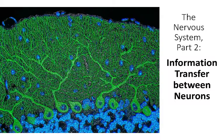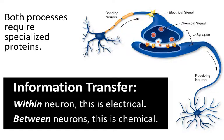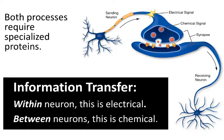Welcome to part two of our lectures on the nervous system. In this video we're going to talk about how information is transferred from one neuron to the next. Information transfer within a neuron is electrical — it involves the movement of charged particles. We're going to start understanding this by describing the process of information transfer between neurons, which involves taking an electrical signal in one neuron, converting it into a chemical signal that is then exocytosed and released from the first neuron and detected by the second neuron.